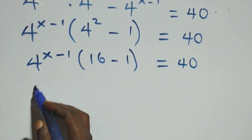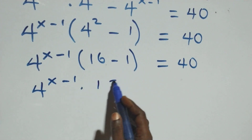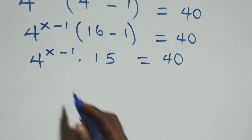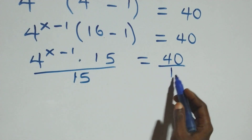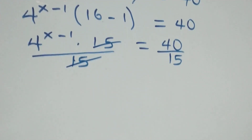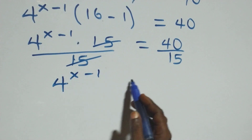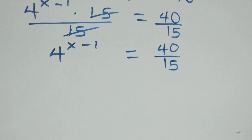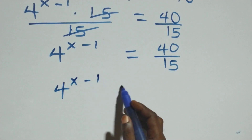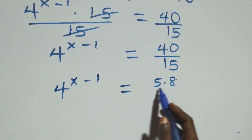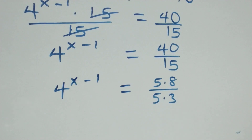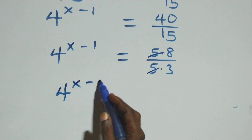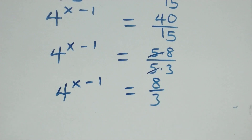This becomes 4^(x-1) times 15 equals 40. We divide both sides by 15, so 4^(x-1) equals 40/15. Simplifying, 40/15 is (5×8)/(5×3); the 5s cancel, giving 4^(x-1) equals 8/3.